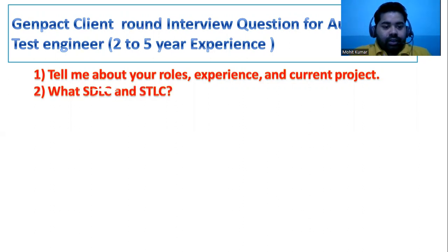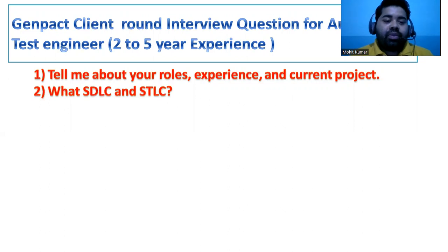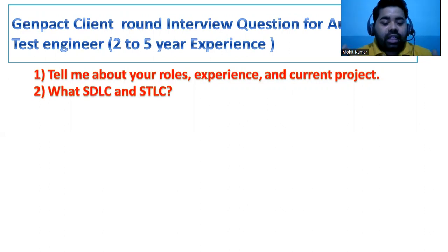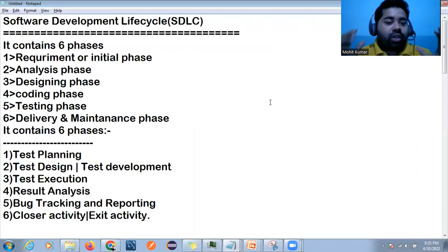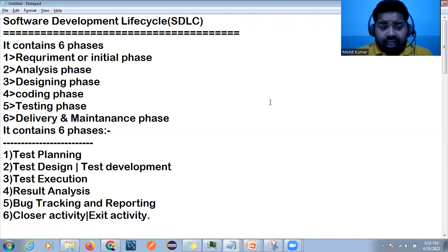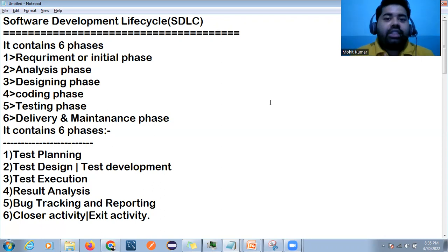The second question is: what is SDLC and STLC? SDLC means Software Development Life Cycle and STLC means Software Testing Life Cycle. In the Software Development Life Cycle we have six phases: requirement or initial phase, analysis phase, designing phase, coding phase, testing phase, and delivery and maintenance phase.